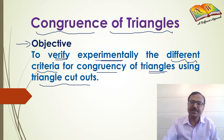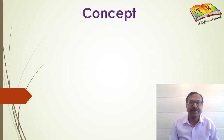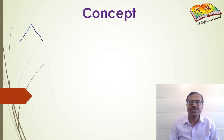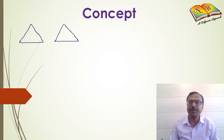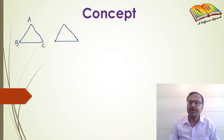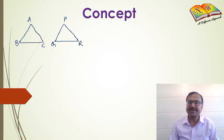Let's see the concept first. When you are given two triangles which exactly resemble each other in terms of shape and size, that means they exactly overlap each other, then these triangles are called congruent triangles. That means if you put one of the triangles on the other, the two triangles will be overlapping exactly.